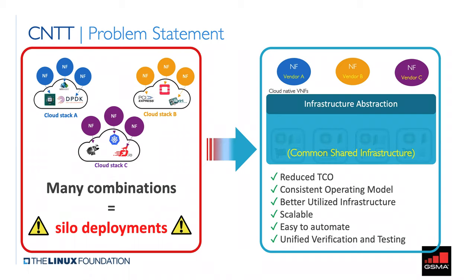Vendors have to go through an onboarding and verification compatibility process with each NFVI platform and VNF vendor combination, and we end up with a lot of siloed deployments. These interoperability issues have led to onboarding time stretching to weeks and months, higher operational complexity, higher costs, and less ability to get out new functions for new services — which was the whole point of service agility. What we aim to achieve in CNTT through a highly collaborative and very focused effort is to realize a more focused and finite set of common cloud infrastructure specifications and configurations.